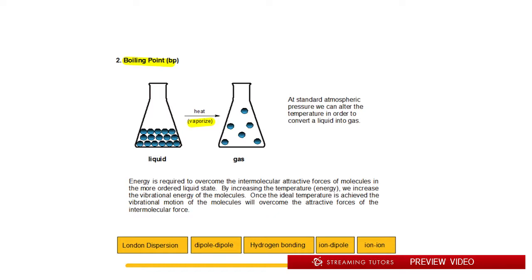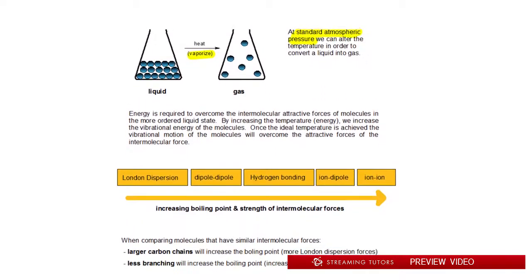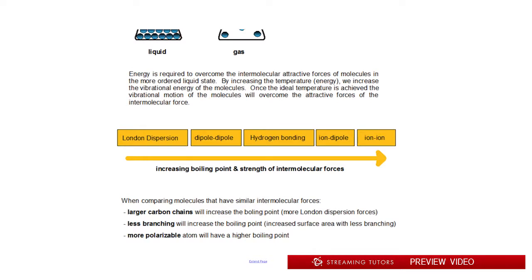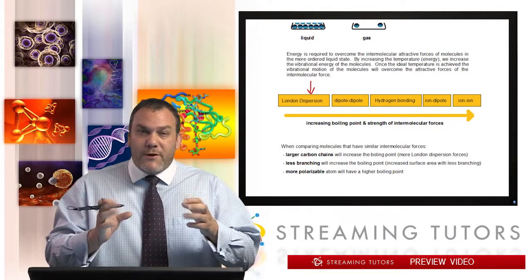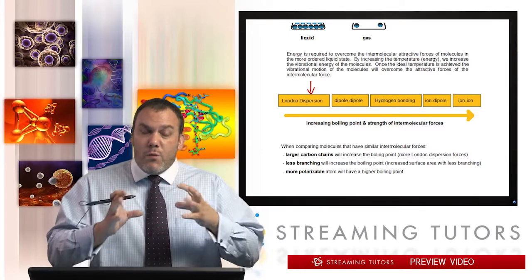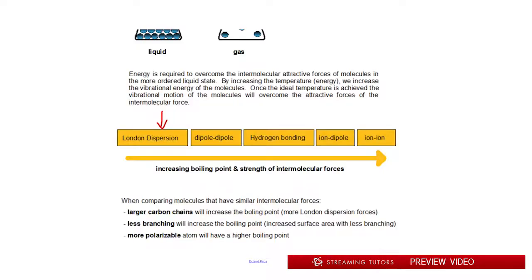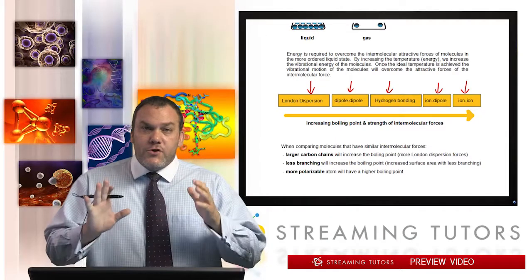Boiling point — or vaporization — is taking a liquid and turning it into a gas at standard atmospheric pressure by raising temperature. London dispersion forces require the least amount of energy to overcome, so molecules with only London forces have the lowest boiling points. As you go up the chart through dipole-dipole and hydrogen bonding, you need more and more energy because the intermolecular attraction is stronger.